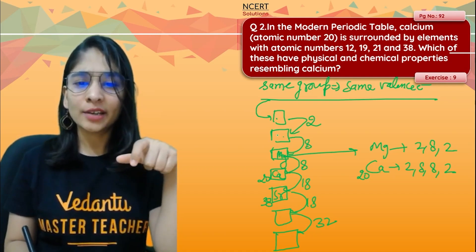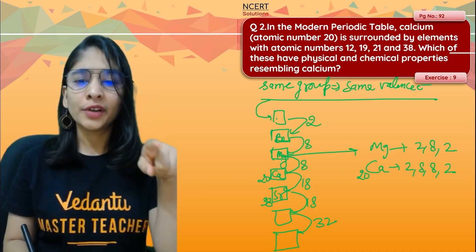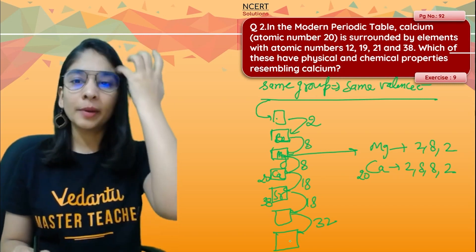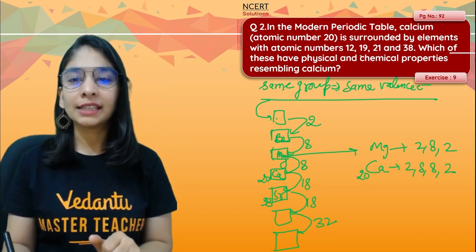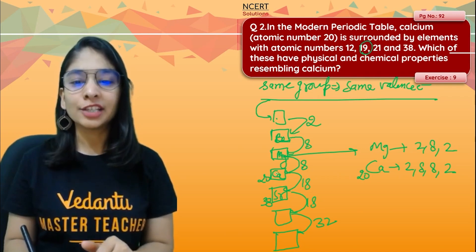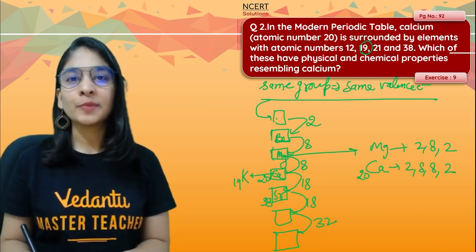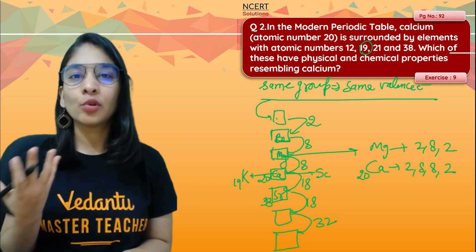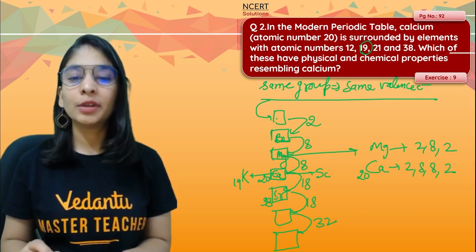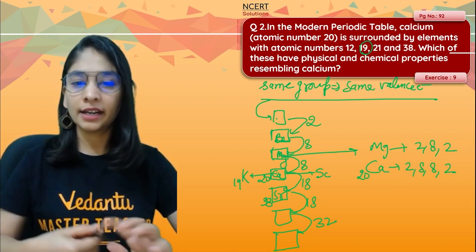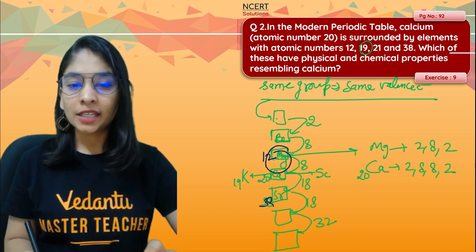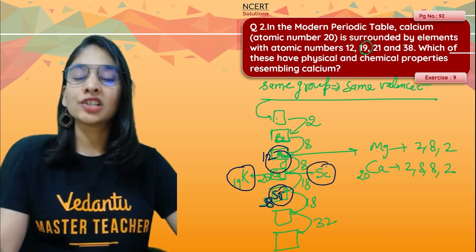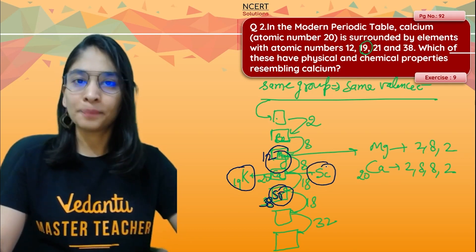So the same group elements are beryllium, magnesium, calcium, and strontium. These share the same valence electrons and are therefore in the same group with the same properties. Elements to the left or right of calcium on the same period won't have matching properties because they have different valence electrons. Magnesium (atomic number 12) and strontium are in the same group as calcium with the same valence electrons and same properties.